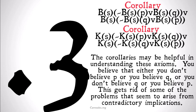Corollaries might be helpful to understand these axioms, or they might not. You believe that either you don't believe P or you believe Q, or you don't believe Q or you believe P. This gets rid of some problems arising from contradictory intuitions about implications, but it still seems problematic. At the very least, these disjunctions or implications are far too complicated for most people to hold actual beliefs about — implicit or not. Even if we claim they are implicit beliefs quickly inferred from our actual beliefs, someone would take some time to infer them because they are relatively complicated logical statements.